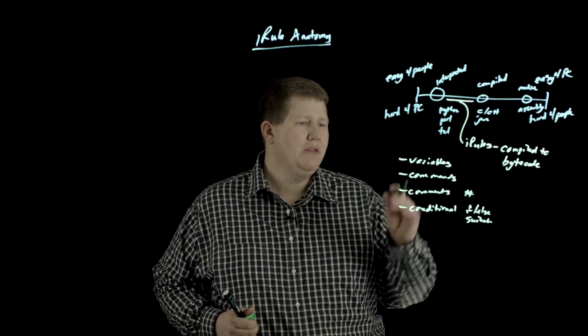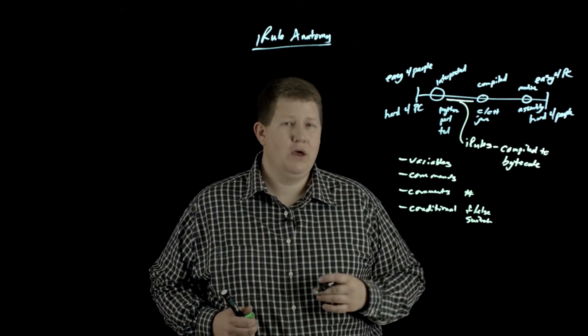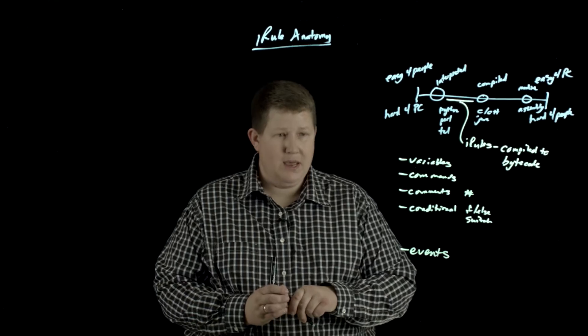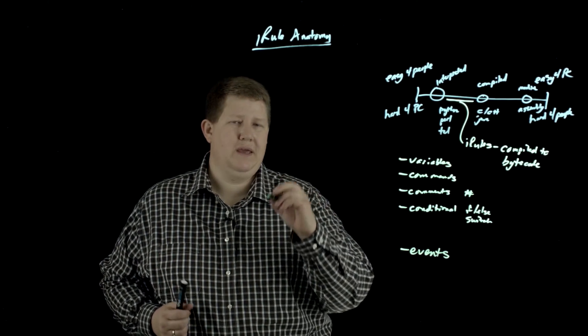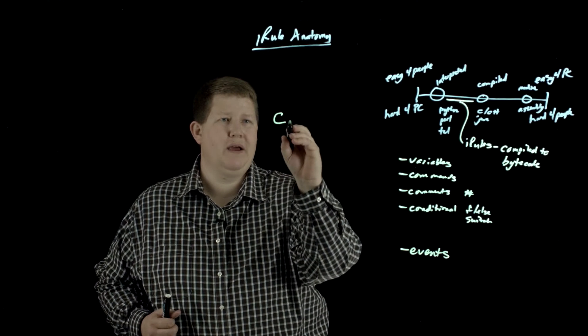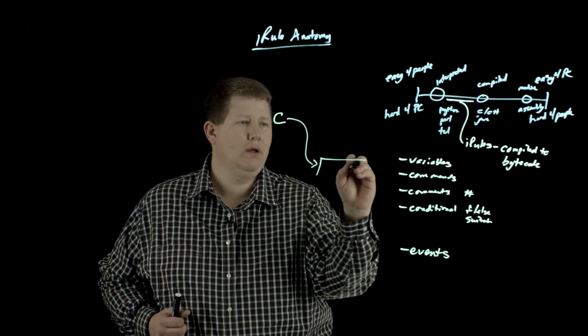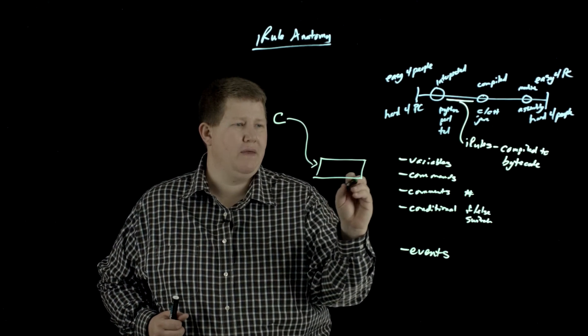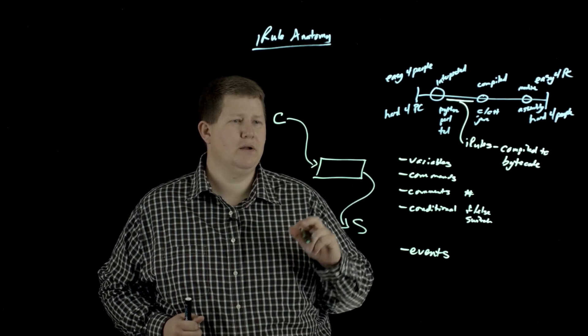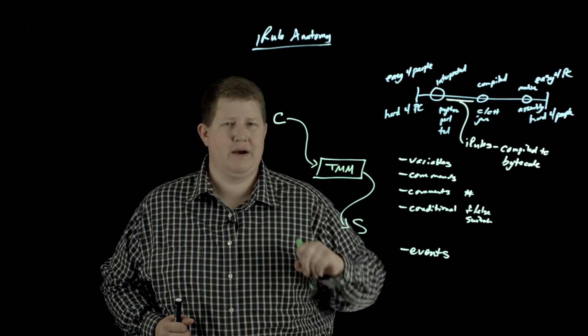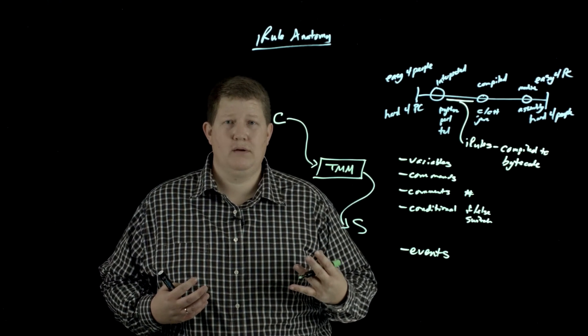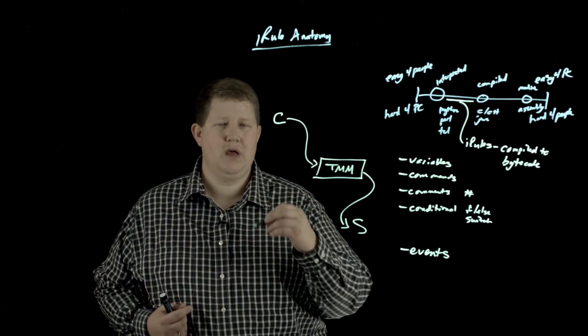So these are ways that iRules are like Tcl. The ways that they're not alike is this concept of events. Basically, if you look at the way the big IP works, we have a connection - we have a client, and that client is going to come down into a big IP, this client connection, and then that's going to get passed on to a server. While it's being processed here, the TMM - the traffic management microkernel - is going to inspect that traffic based upon a certain level of filters.